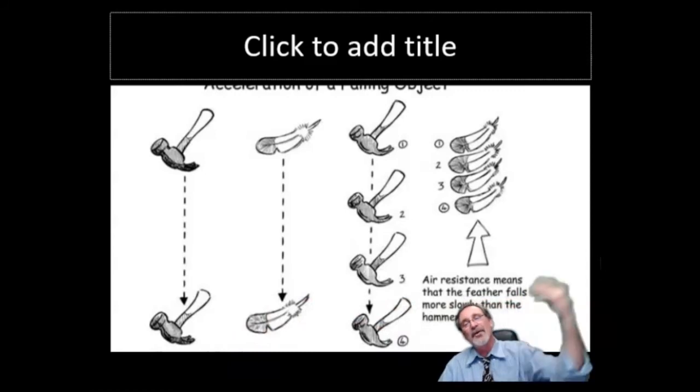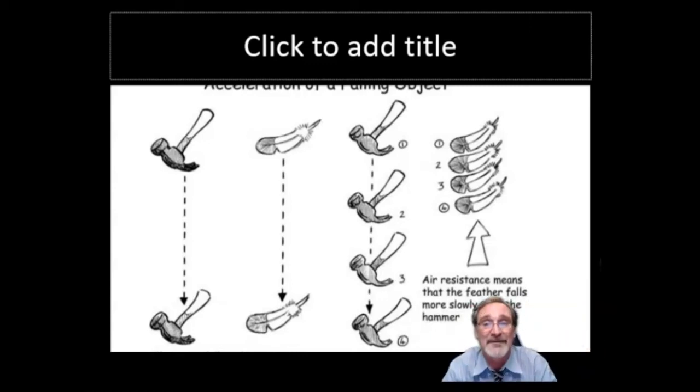When they did the Apollo program and sent people to the moon, they decided to go ahead and try this experiment. Watch what happens. 'Well, in my left hand, I have a feather. In my right hand, a hammer. And I guess one of the reasons we got here today was because of a gentleman named Galileo a long time ago, who made a rather significant discovery about falling objects in gravity fields. And we thought that where would be a better place to confirm his findings than on the moon. And so, we thought we'd try it here for you. The feather happens to be appropriately a Falcon feather for our Falcon. And I'll drop the two of them here, and hopefully, they'll hit the ground at the same time.' How about that? How about that? Mr. Galileo was correct in his findings.